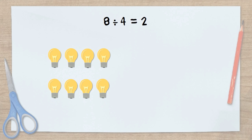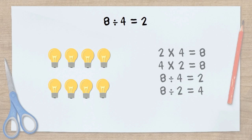Meaning, our missing factor is 4. 8 divided by 4 equals 2. Now remember, now that we know that fact, we can use our fact families to know these other facts as well.